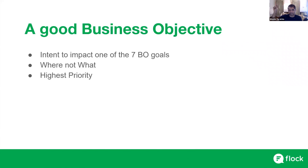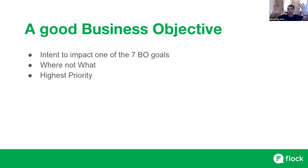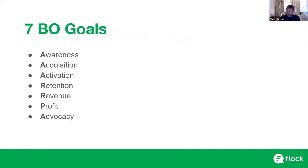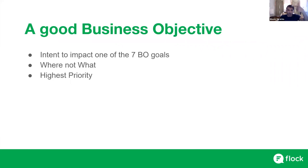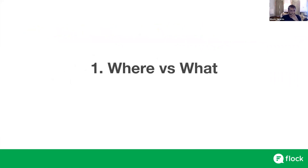So it should be an intent to impact one of the seven business objective goals, and it should be a where, not a what. And the third one is it should be the highest priority things that you want to focus on. You can come up with 20 objectives, but you want to make sure that you select the three, four, or five highest priority objectives — relevant for the company if you're doing company objectives, or relevant for your team if doing team-level objectives. So keep these three points in mind: impacting one of the seven goals, where do you want to go, and highest priority.